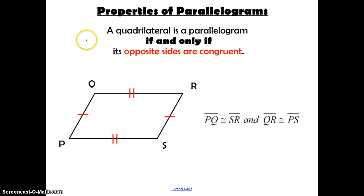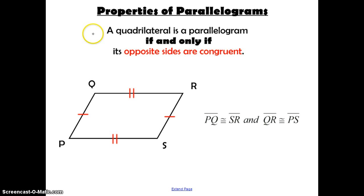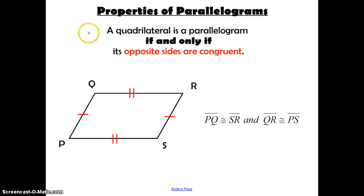On the next five slides, we're going to be discussing properties of parallelograms. The first four will be biconditionals. Biconditional statements have the phrase 'if and only if,' meaning the conditional statement and its converse are both true. All four of these properties can be used to prove certain things about a parallelogram, or we can use the facts to prove that the quadrilateral is a parallelogram.